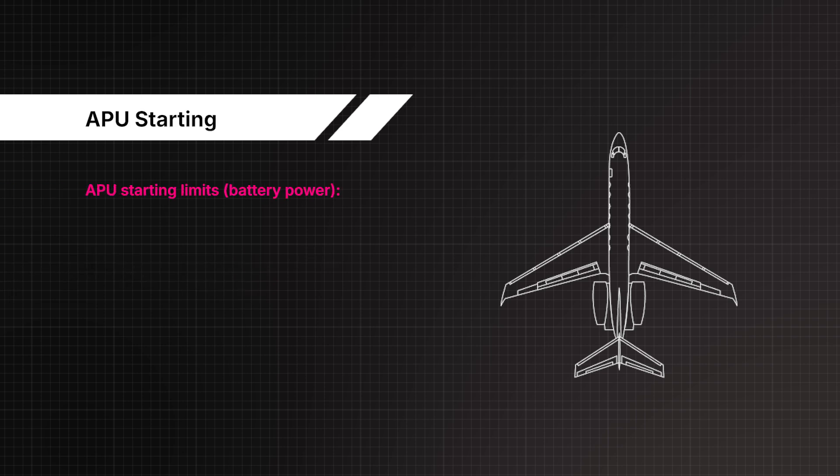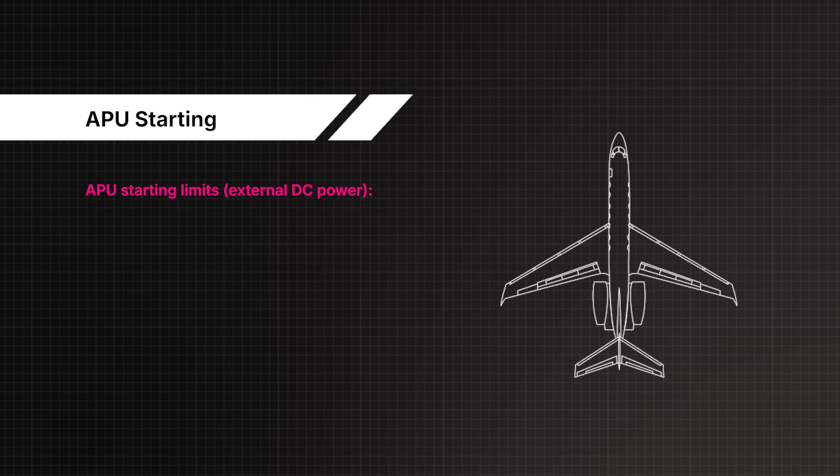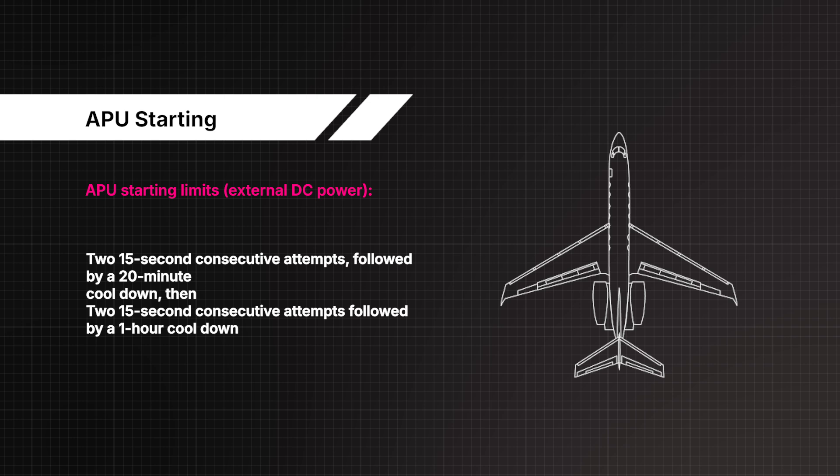APU starting limits on battery power: 3 consecutive 30-second attempts followed by a 20-minute cooldown, then 3 consecutive 30-second attempts followed by a 1-hour cooldown. APU starting limits on external DC power: 2 consecutive 15-second attempts followed by a 20-minute cooldown, then 2 consecutive 15-second attempts followed by a 1-hour cooldown.